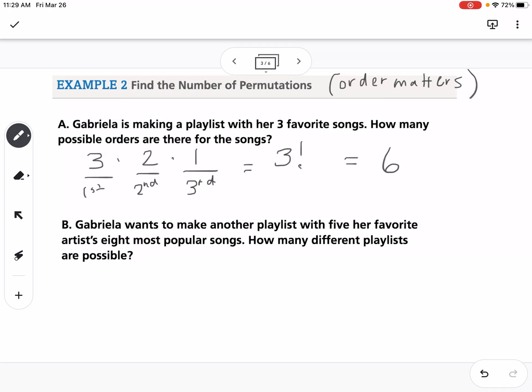Now the second one says Gabriella wants to make another playlist with five of her favorite artist's eight most popular songs. How many different playlists are possible? The notation for this is 8P5. We have eight in the group we're picking from, and we're only picking five of them.